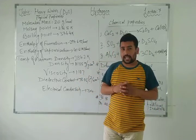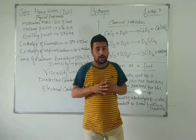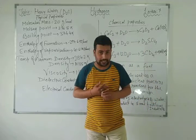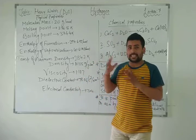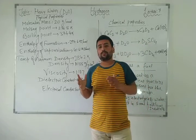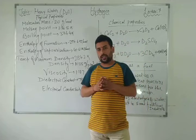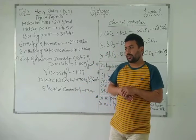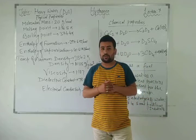First, let us revise what we have studied in the previous six lectures. In lecture one, I informed you about the position and occurrence of hydrogen. In lecture two, preparation, physical and chemical properties and uses of dihydrogen. In lecture three, hydrides. In lecture four, covalent hydrides and metallic hydrides. In lecture five, water. In lecture six, hardness — temporary and permanent — of water.